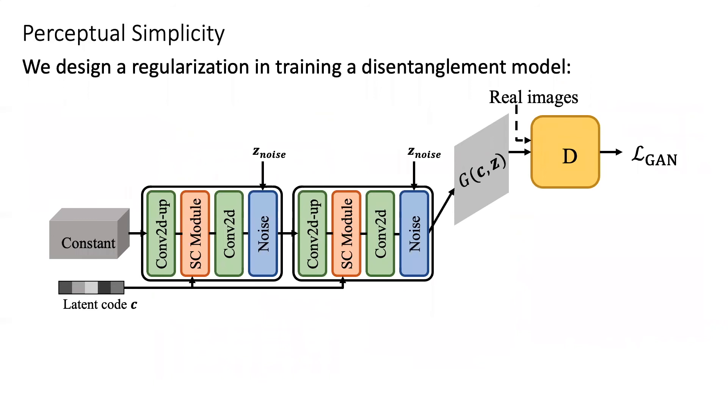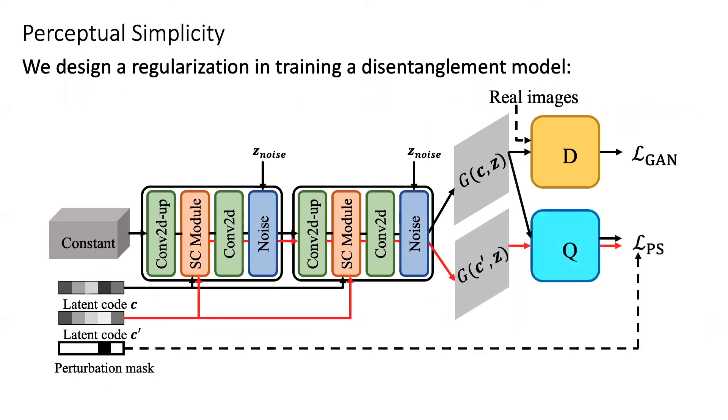Now let me show how this perceptual simplicity assumption can be imposed as a constraint on the model learning. We actually do it by introducing another loss, the loss of PS.